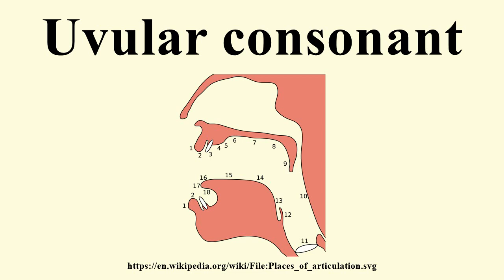The voiceless uvular stop Q is pronounced somewhat like the voiceless velar stop K, but with the middle of the tongue further back on the velum, against or near the uvula. The most familiar use will doubtless be in the transliteration of Arabic place names such as Qatar and Iraq into English, though since English lacks this sound, it is generally pronounced as K, the most similar sound that occurs in English.